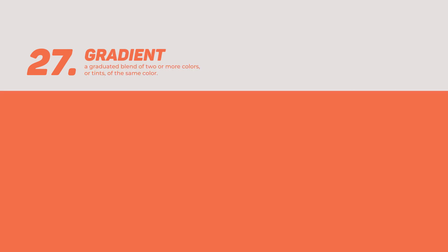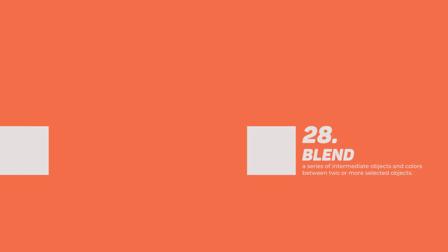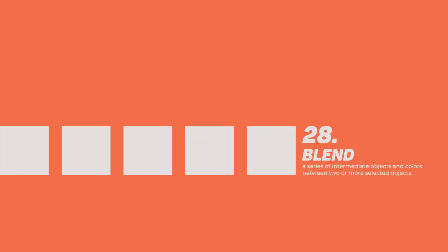Gradient — a graduated blend of two or more colors, or tints of the same color. Blend — a series of intermediate objects and colors between two or more selected objects.